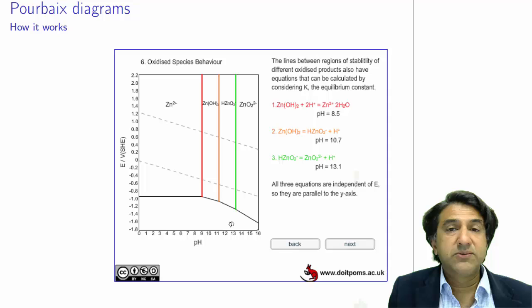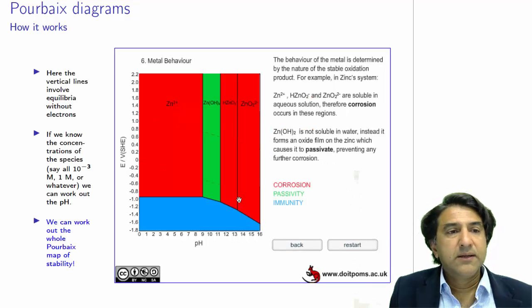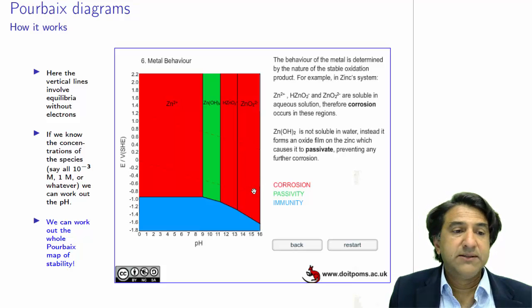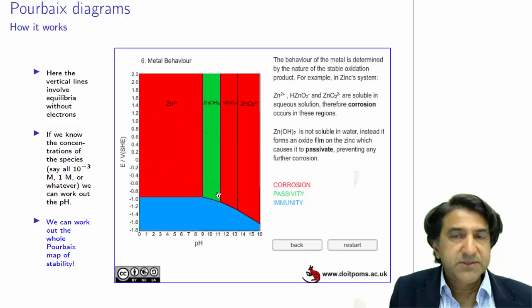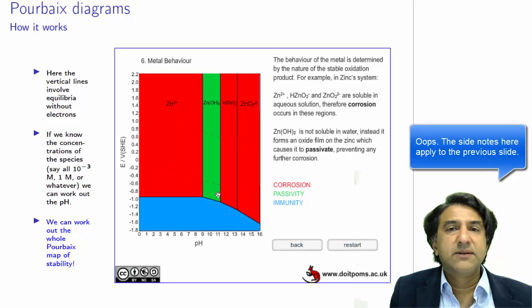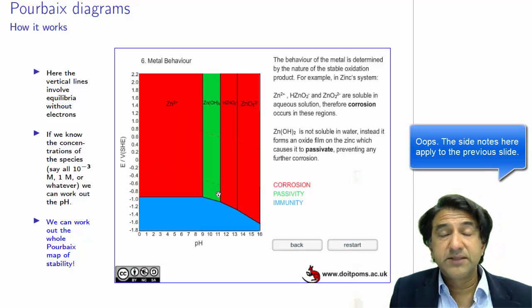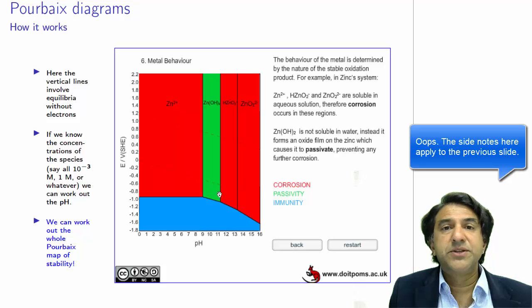We have now constructed a very simple Pourbaix diagram for zinc. We can use it to examine corrosion behavior.